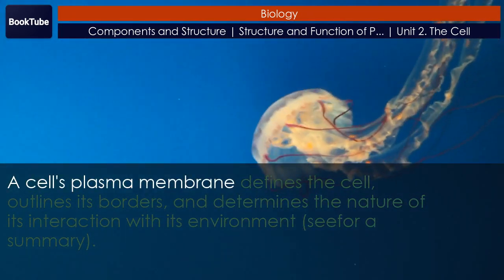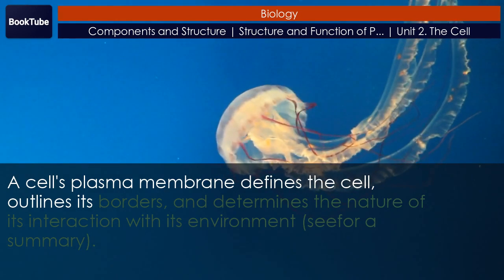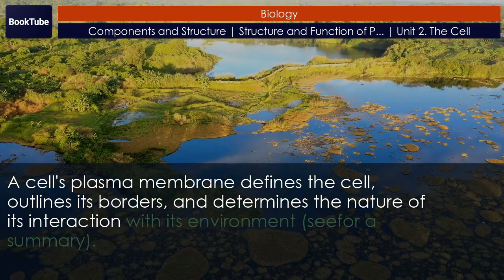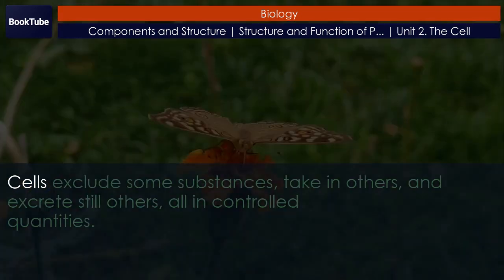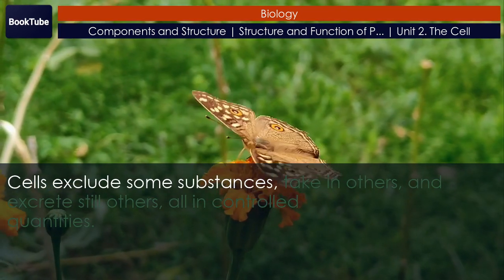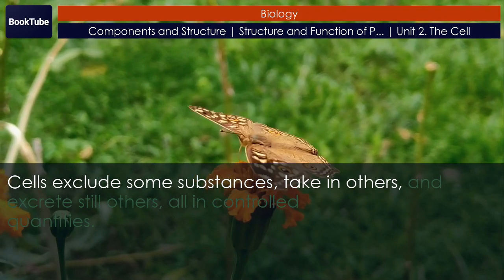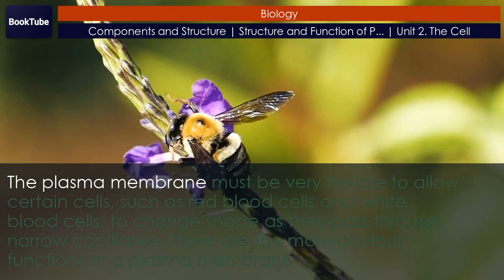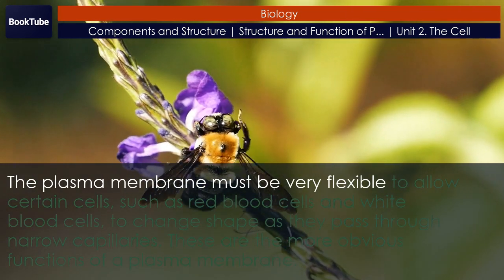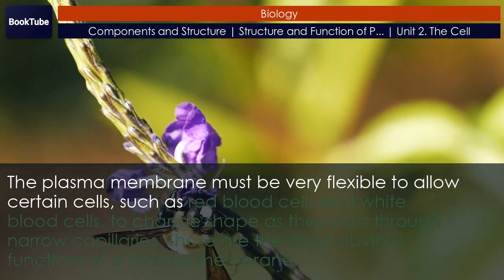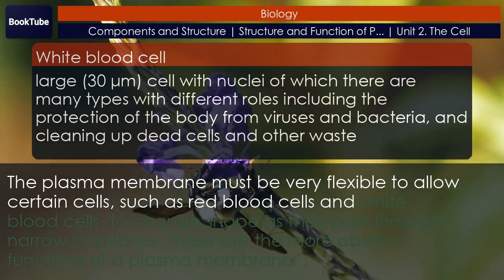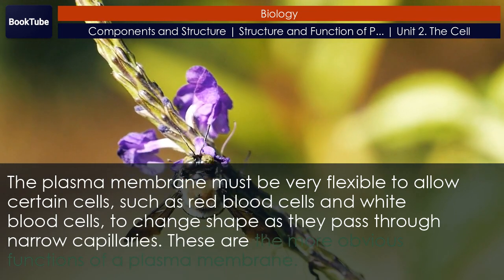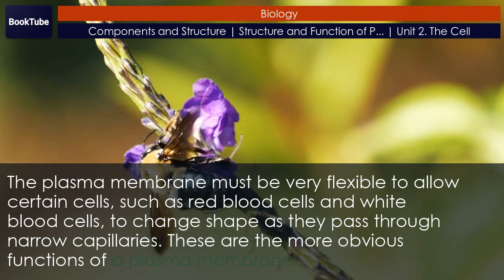A cell's plasma membrane defines the cell, outlines its borders, and determines the nature of its interaction with its environment. Cells exclude some substances, take in others, and excrete still others, all in controlled quantities. The plasma membrane must be very flexible to allow certain cells, such as red blood cells and white blood cells, to change shape as they pass through narrow capillaries. These are the more obvious functions of a plasma membrane.